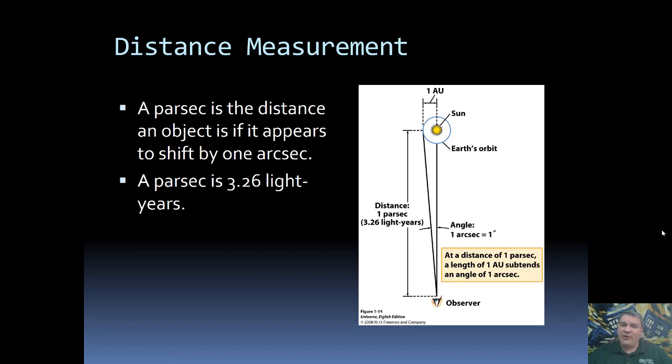Astronomers actually prefer parsecs over light years because it's an exact geometric measurement. In other words, it gives us a much better idea of exactly how far away it is. But because the definition is kind of mathy and you kind of have to understand the physics of what's going on, in general, we often just convert to light years.